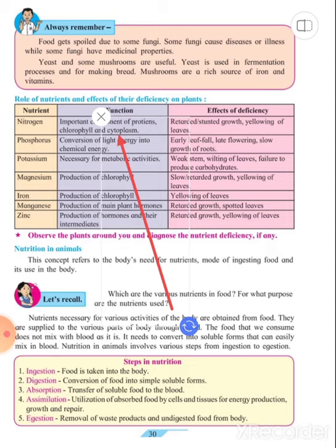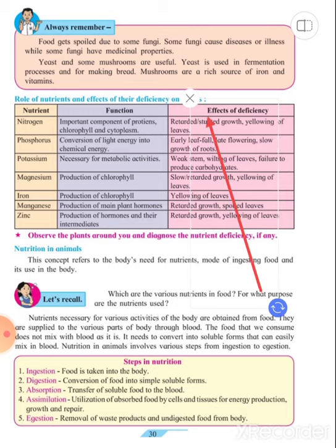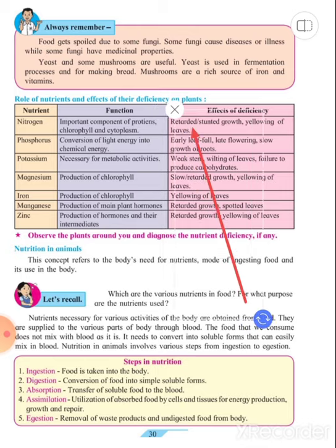Nitrogen is a component of the plant - protein, chlorophyll and cytoplasm. If there is a deficiency of nitrogen, then we observe retarded or stunted growth and yellowing of leaves.